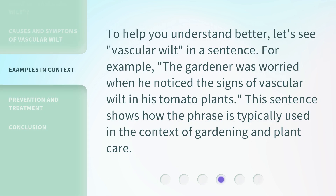To help you understand better, let's see Vascular Wilt in a sentence. For example: the gardener was worried when he noticed the signs of vascular wilt in his tomato plants. This sentence shows how the phrase is typically used in the context of gardening and plant care.